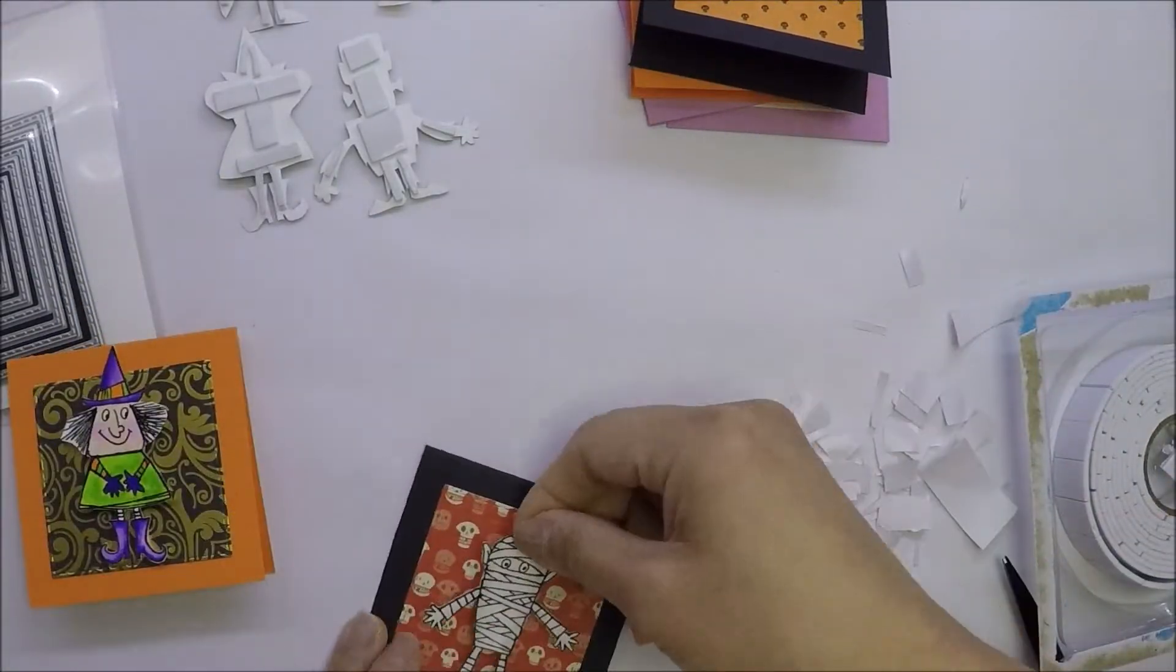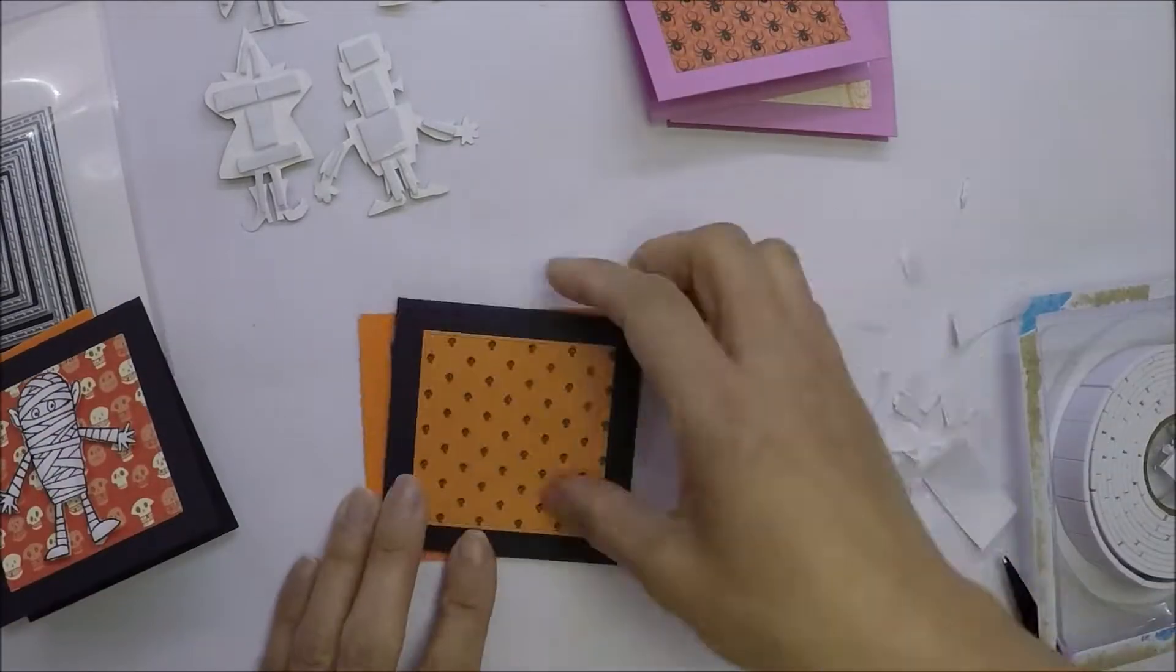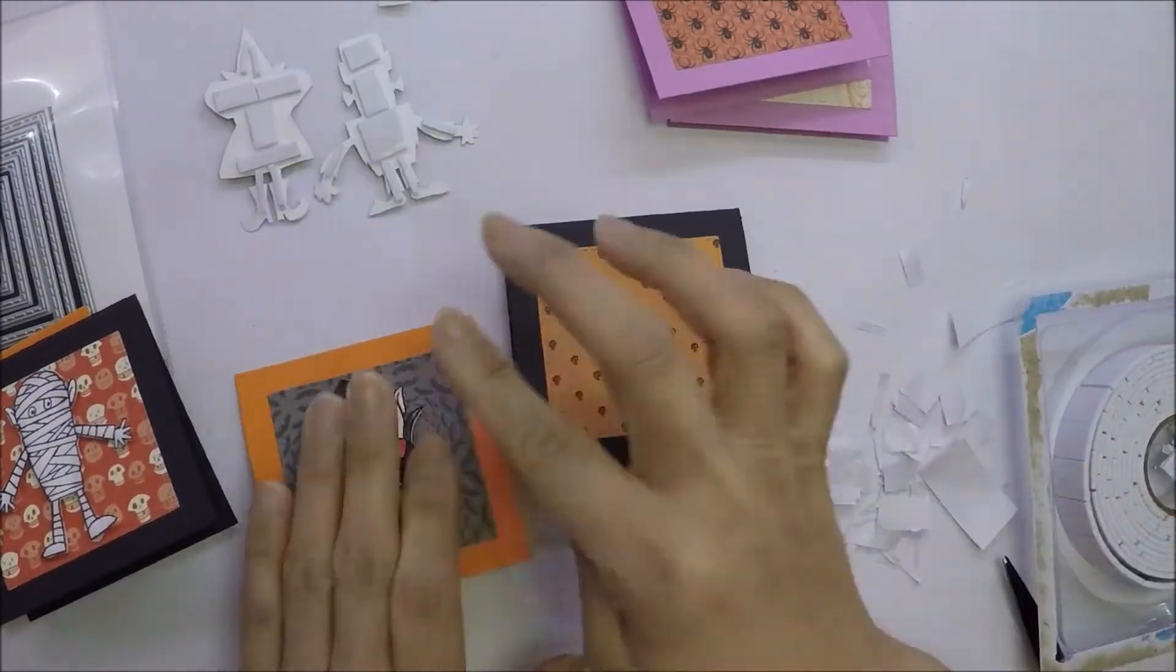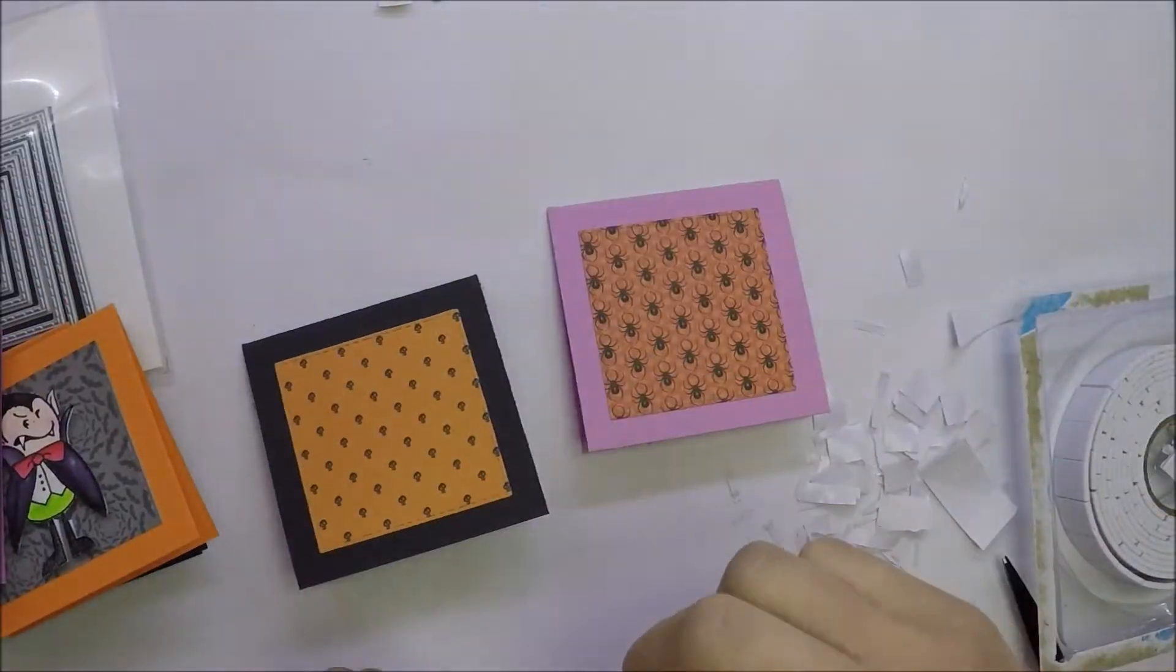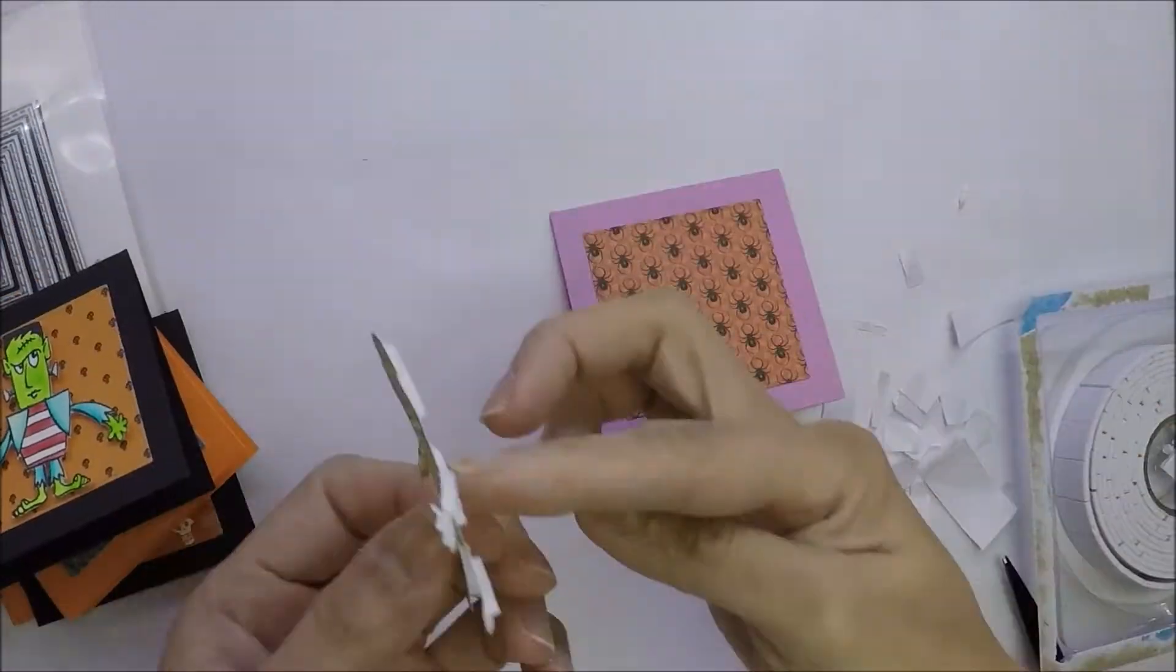So for the colored images, I just place them in the middle where the pattern paper is and I use foam tape to adhere them on the card.